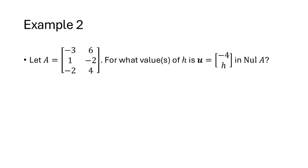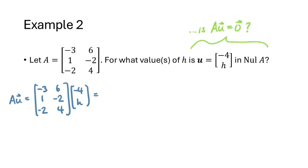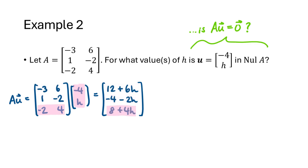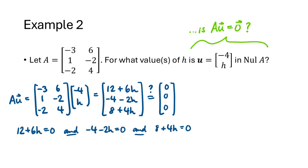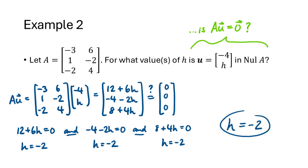Here's another example. We have a matrix A and a vector u that has a variable H in it, and we want to know which values of H make that vector be in the null space of A. That means A times the vector must equal the zero vector. Computing A times the vector, we get (12 + 6H, -4 - 2H, 8 + 4H). For all entries to equal zero simultaneously, we set each expression equal to zero — each equation gives H = -2. So H = -2 is the only value for which this vector is in the null space of A. We can verify by multiplying A times (-4, -2) to confirm we get the zero vector.